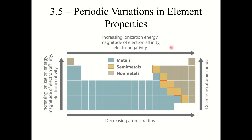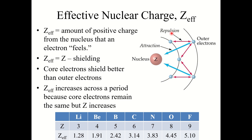Section 3.5: Periodic Variations in Element Properties. Let's start by looking at effective nuclear charge, Z-effective. This is not an actual equation you need to memorize or know how to use; it's just a general way of describing effective charge.